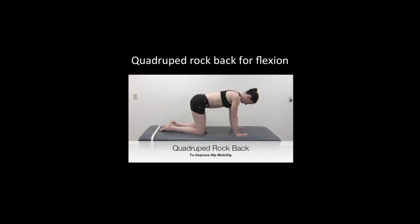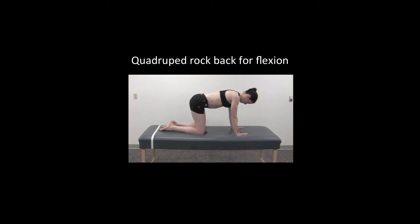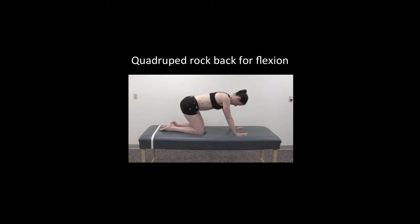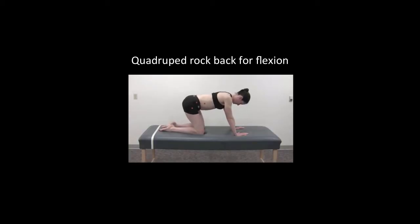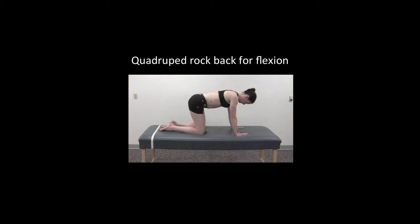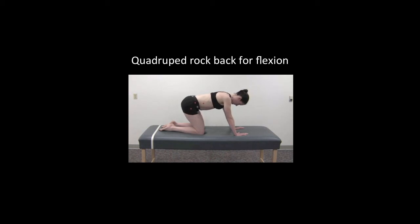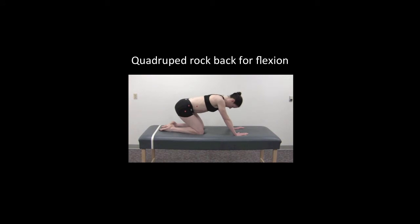Follow your mobilizations with exercises that help restore hip mobility, including strengthening exercises and this quadruped rock back for hip flexion. Note the patient is moving slowly and gently into her stiffness. There is only partial weight bearing into the hip joint, and the joint is stabilized nicely into the socket by the patient's body weight. Multiple repetitions should be done to improve joint mobility.